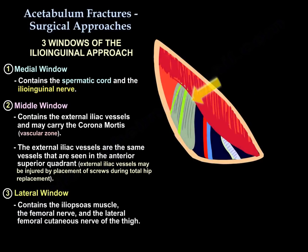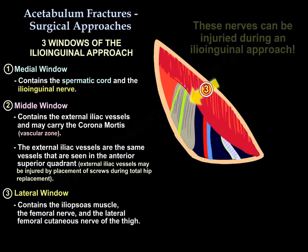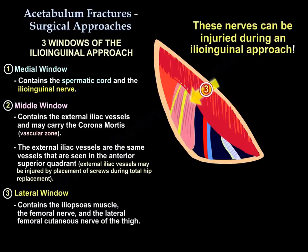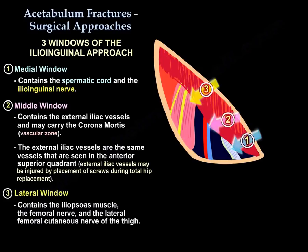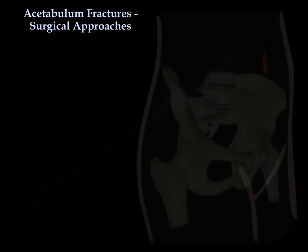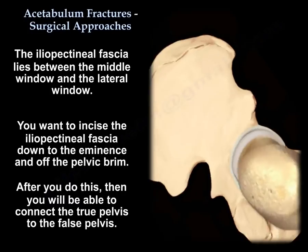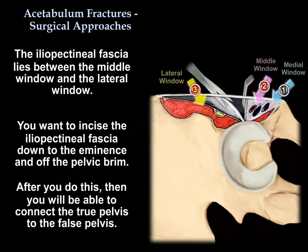The third window, the lateral window, contains the iliopsoas, the femoral nerve, and the lateral cutaneous nerve. These nerves can be injured during an ilioinguinal approach. The iliopectineal fascia lies between the middle window and the lateral window. You want to incise the iliopectineal fascia down to the eminence of the pelvic brim. After that, you will be able to connect the true pelvis to the false pelvis.